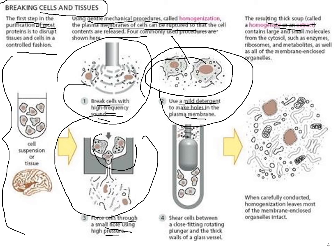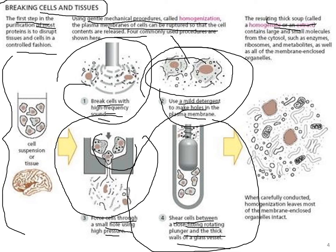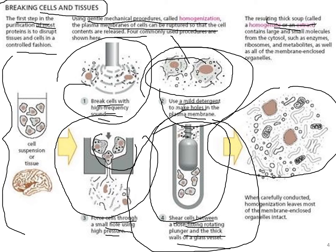The fourth step is shearing cells between a close-fitting rotating plunger or against the thick walls of glass vessels — applying adequate pressure to break the cells without breaking the test tube. After this plunging, we can observe most of the micro-organelles and cell contents separated under a microscope.